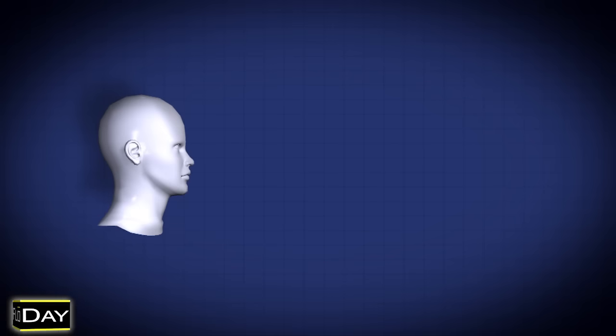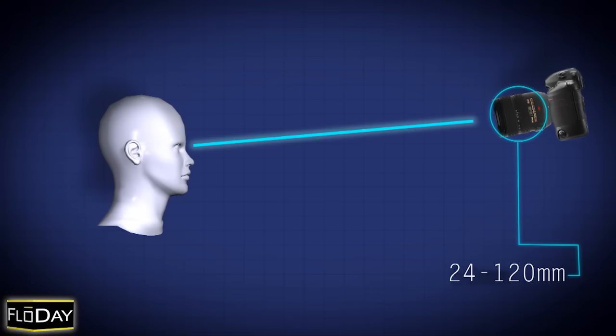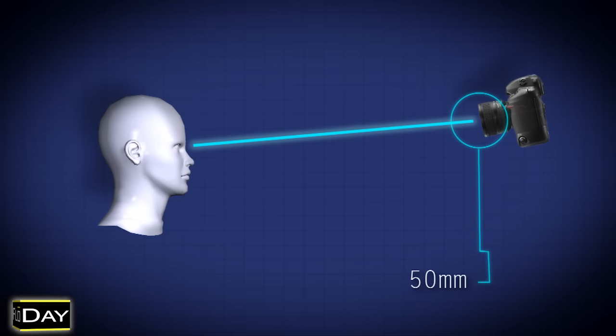Establish where your subject and camera are going to be. To capture flattering portraits, a guideline is that your camera should be positioned 6 to 12 inches above the subject's face. The lens you choose to use will determine the distance from your subject you will be shooting from. Once you know approximately where you're going to be positioned and your subject will be, you can start setting up your lights.